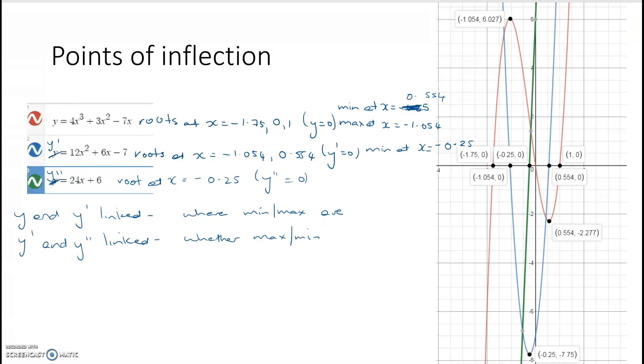Look at the sign of y double dash to do this, that if y double dash is positive, then we have a minimum, and if y double dash is negative, then we have a max. So, what that implies is that at some stage, y double dash is equal to 0, at some stage, because it must be.